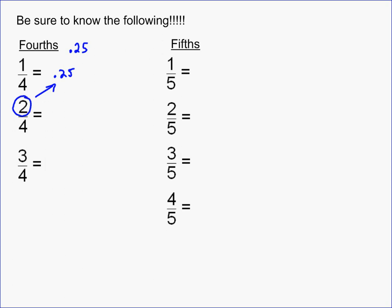So two times 25 is 50, which would mean it would be two-fourths is 0.50, which we should know because two-fourths simplifies to one-half. And then three-fourths, well, three times 25 is 75, so it becomes 0.75. And so you should know what one-fourth, two-fourths, and three-fourths are.